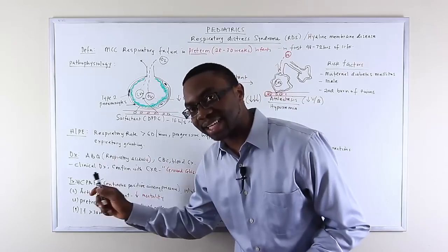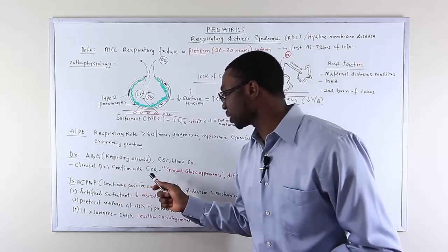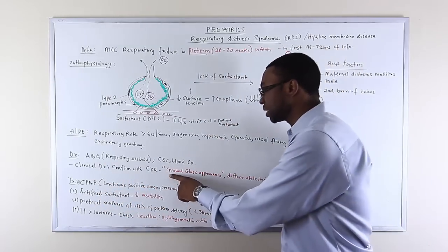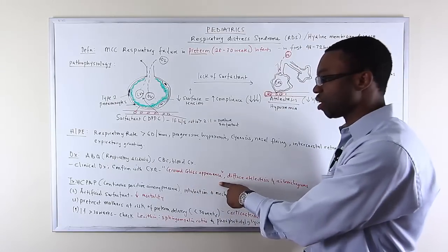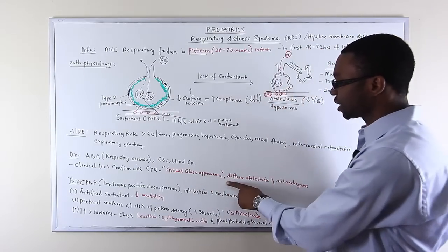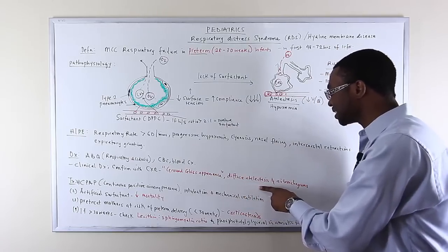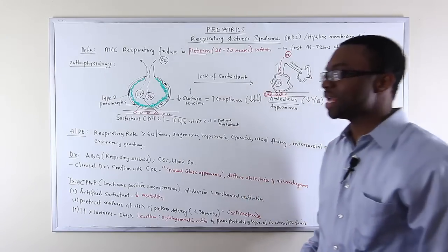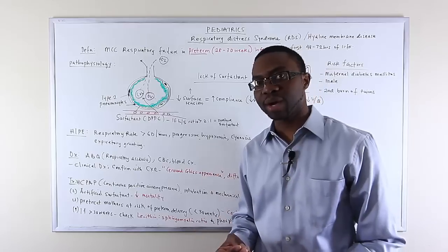The most important thing is a clinical diagnosis, but you want to confirm with a chest x-ray. What you're going to see on chest x-ray is the ground glass appearance. Because all their lungs are collapsed, you're going to see diffuse atelectasis and air bronchograms.